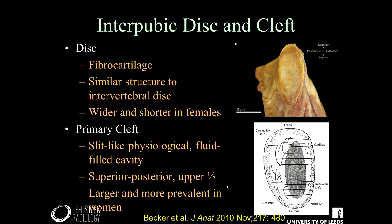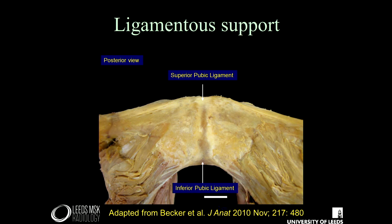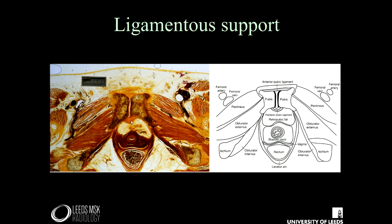The joint itself is reinforced by ligaments. Viewing from behind the joint looking out, there's a superior and inferior pubic ligament, blending with the capsule, and here we have the pubic bodies. Looking down, we can see the pubic bodies again, with capsular thickenings posteriorly and anteriorly, again strengthening the joint with the disc centrally.